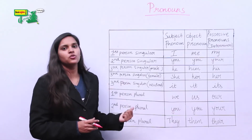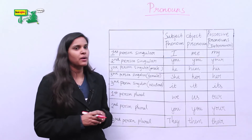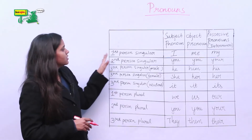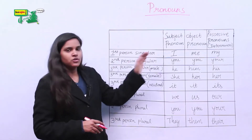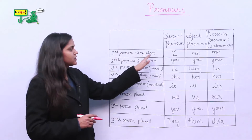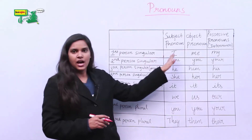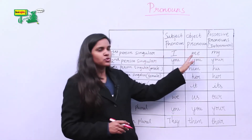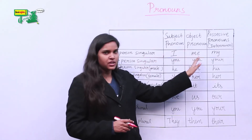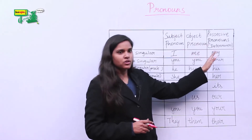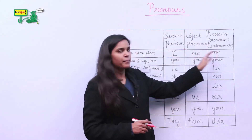So let's go through this one by one. The subject pronoun of first person singular is I, the object pronoun is me, and the possessive pronoun is mine.